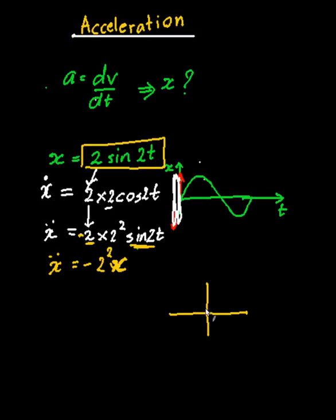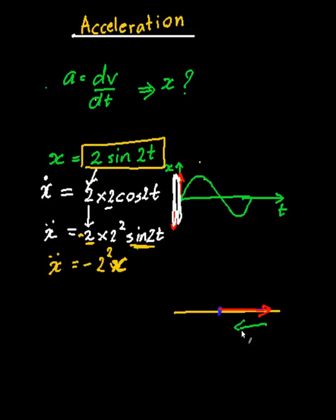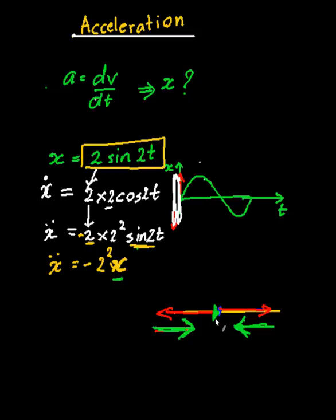Looking at the x-axis: what this is saying is that the further away the particle goes, the higher the acceleration is towards the center. When x is positive, acceleration points back toward zero; when x is negative — when the particle is somewhere out here — acceleration also points toward zero. The further out you go, the higher the acceleration toward the center. This special case is called simple harmonic motion, SHM — we'll deal with that more later.